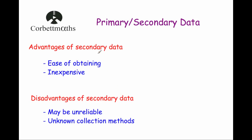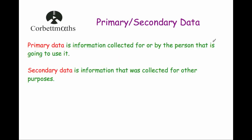So, to summarise: primary data is information collected by the person or for the person that's going to use it, and secondary data is information that was collected for other purposes and can then be used afterwards.